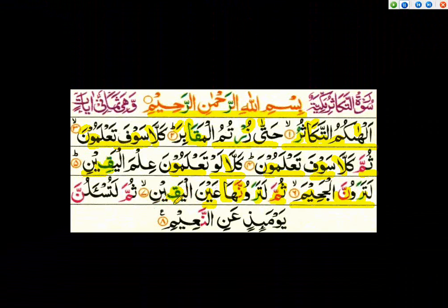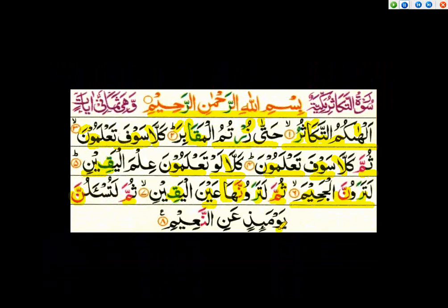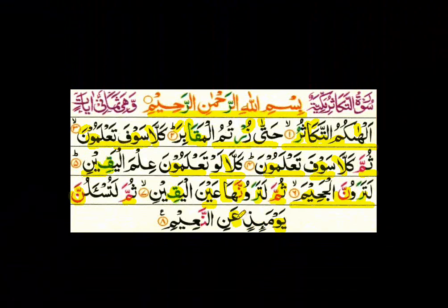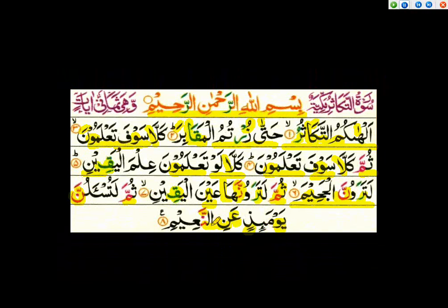Qof is one of the bold letters, and there is also a shaddah on it, so we do prolong and gunna. Yawma — this waw is one of the waw lean. Yawma idhin — if any throat letter comes after the noon sakin or tanwin, we don't need to take the voice into the nose at all. Ayn is one of the throat letters, so it is izhar here after the tanwin. Yawma idhin — we connect this meem with the second meem because it has shaddah on it, and we do gunna here.